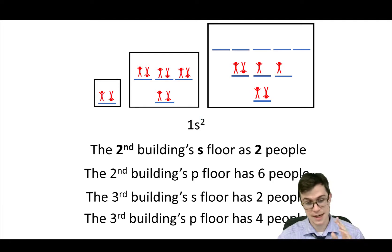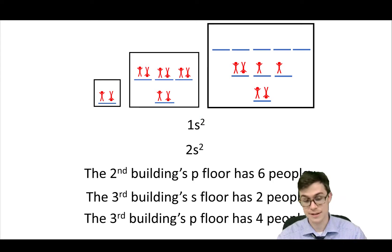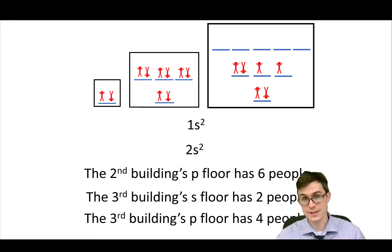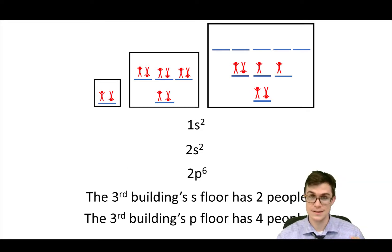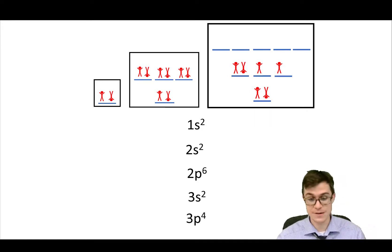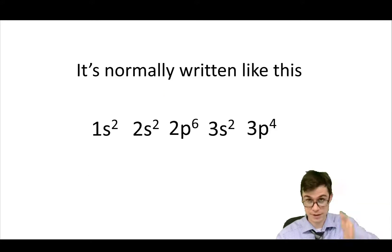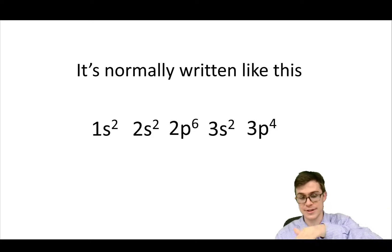So the second building's S floor has two people — we would write that as 2S2. The second building's P floor has six people — we write that as 2P6. The third building's S floor has two people, and the third building's P floor has four people in it. This is the electron configuration, and normally we don't write it vertically — we write it horizontally, like this.